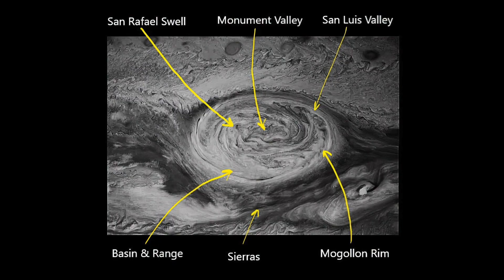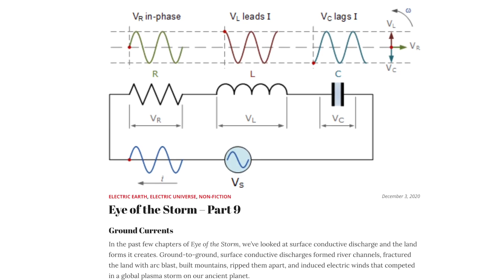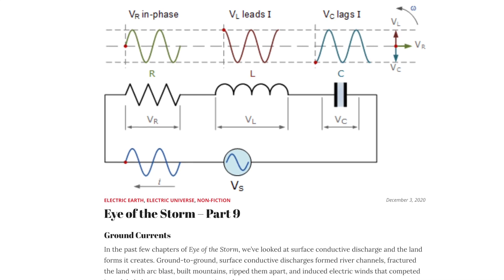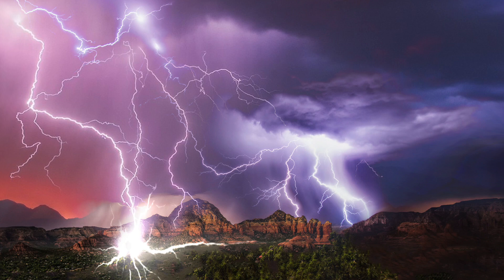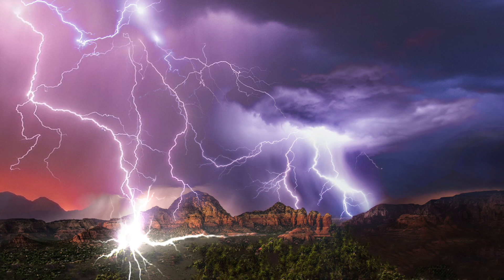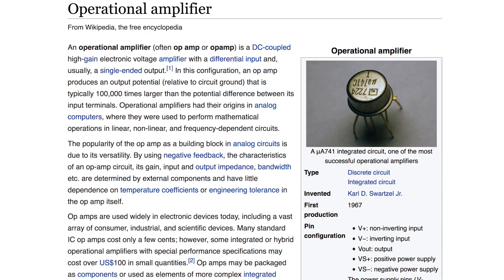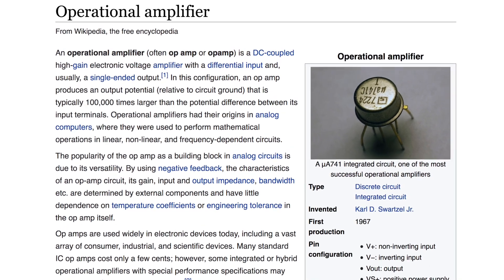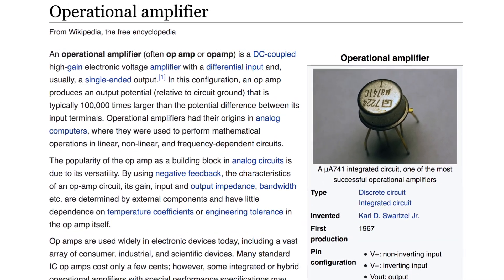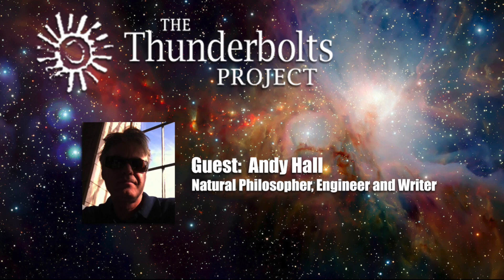Like the ground current loops discussed in Chapter 9, these ring currents had DC input from lightning and plasma winds and current junctions with the ground, so they could act as op-amps, using the DC current to amplify the ring current. That realization was a pretty good egg, but it gets better.